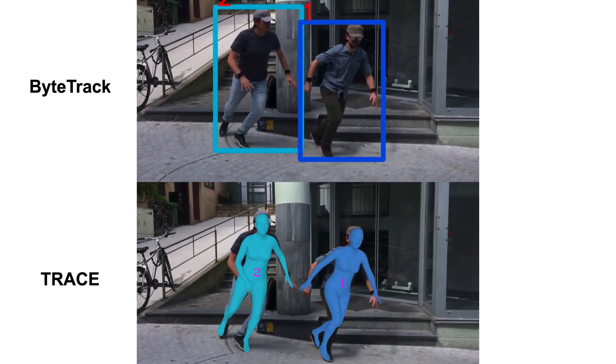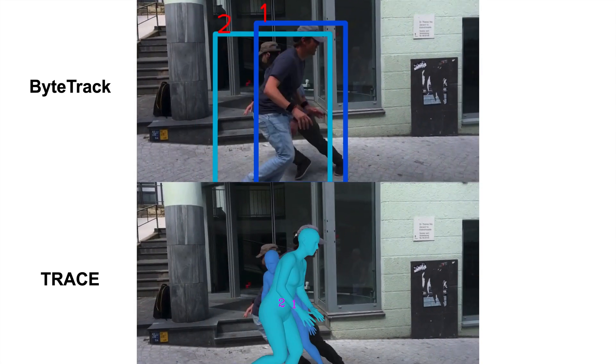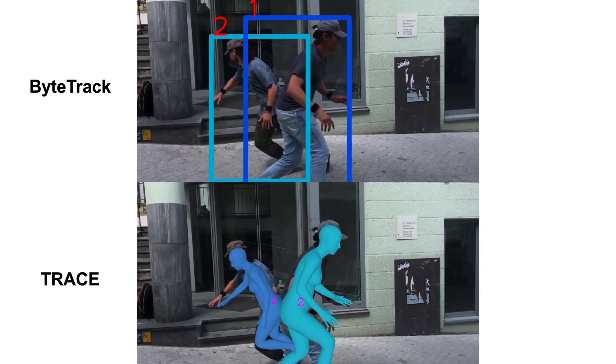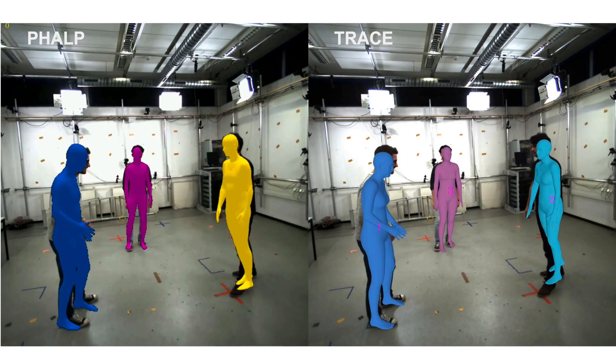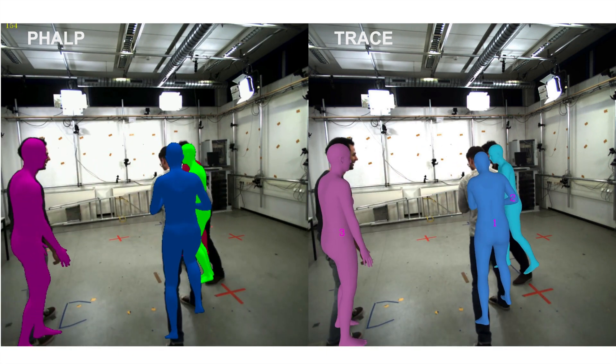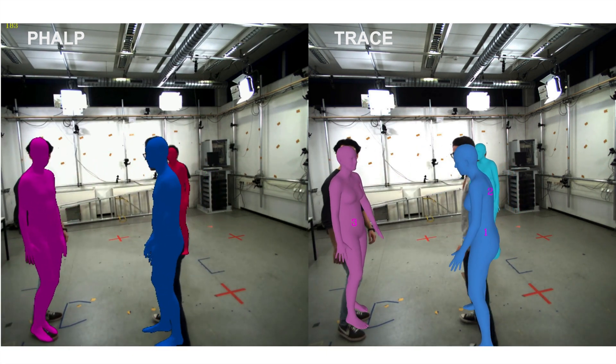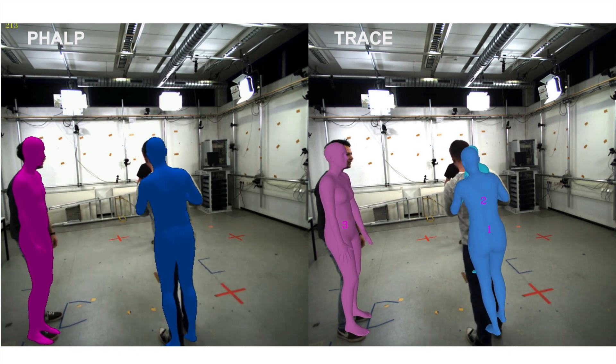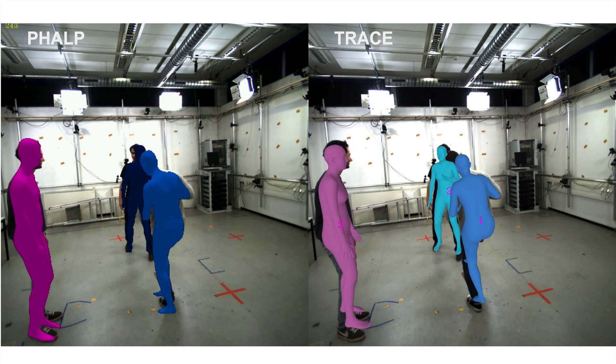By learning a holistic 5D representation, TRACE avoids imposing handcrafted priors for tracking and can adapt to more general cases with irregular human motions. Going beyond the 3D cues used by PAP, end-to-end learning in 5D makes TRACE more robust to occlusions during tracking.